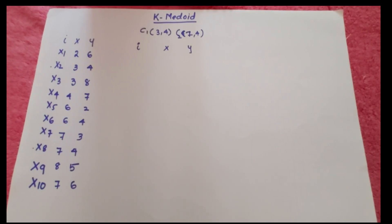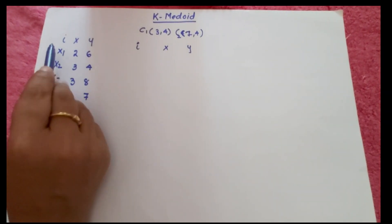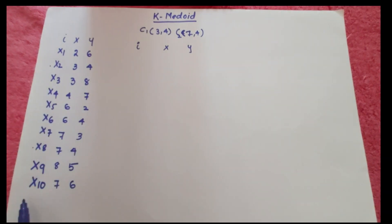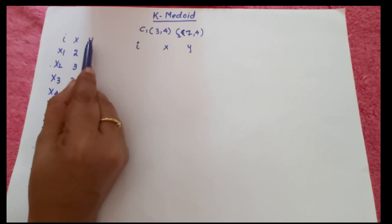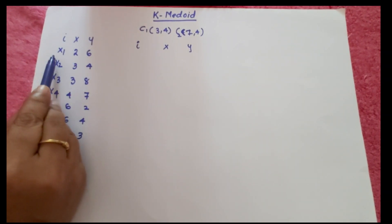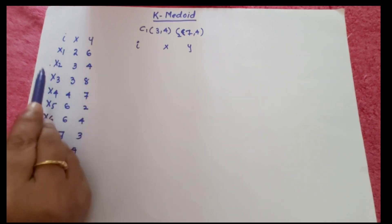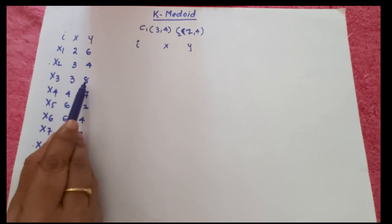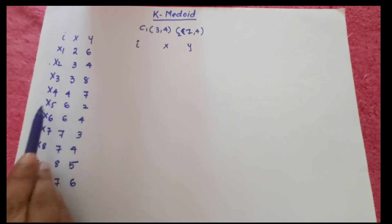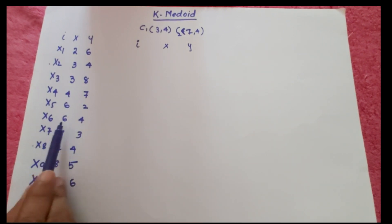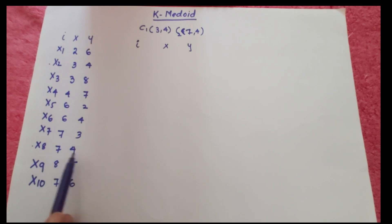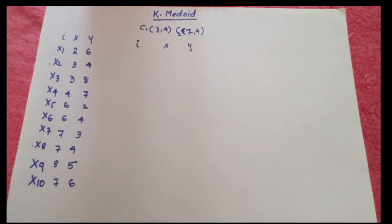Now for the K-Medoid example. We have 10 data points X1 through X10 with X and Y values: X1(2,6), X2(3,4), X3(3,8), X4(4,7), X5(6,2), X6(6,4), X7(7,3), X8(7,4), X9(8,5), X10(7,6).